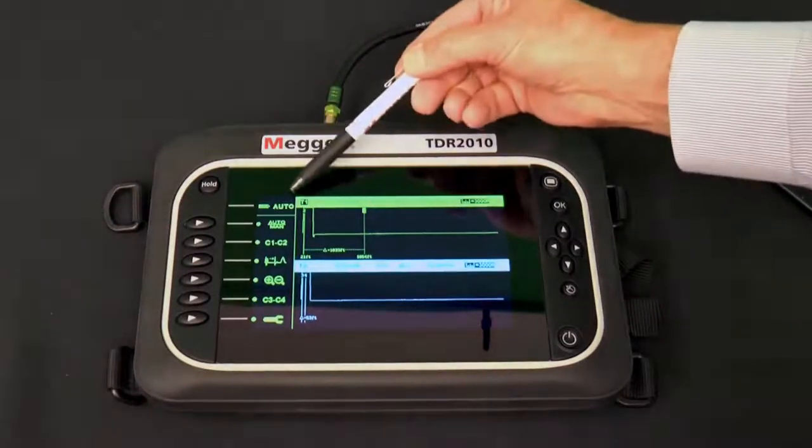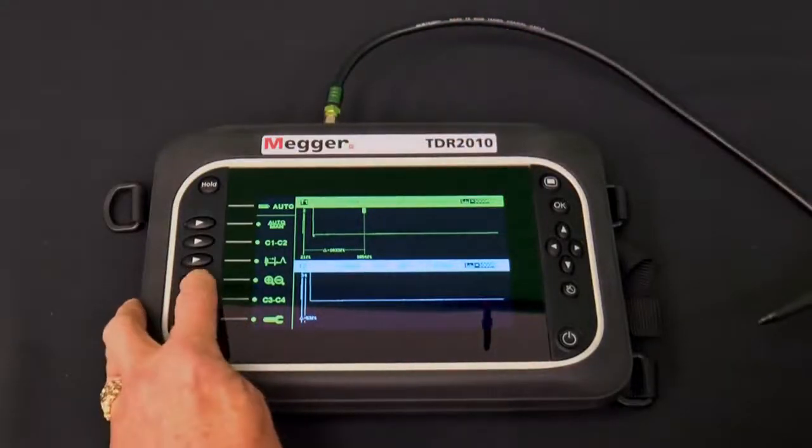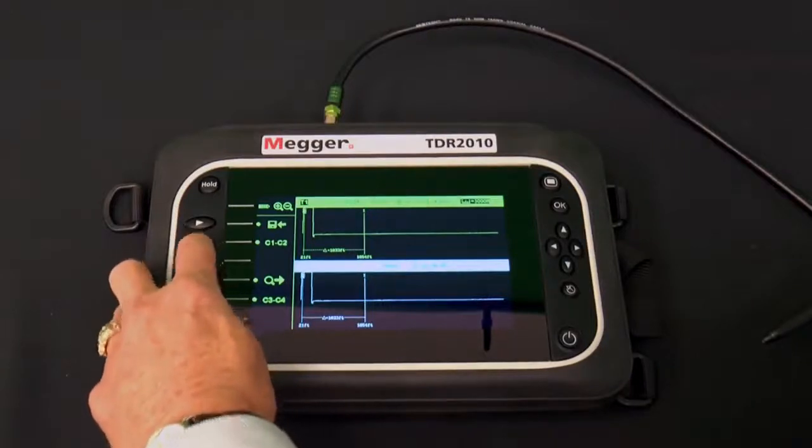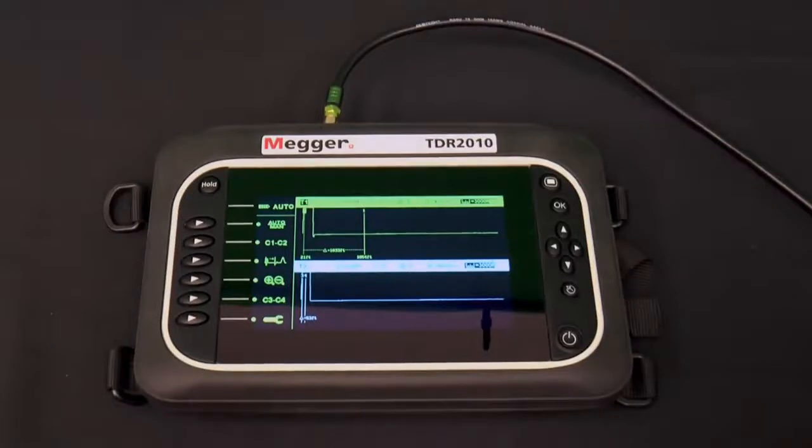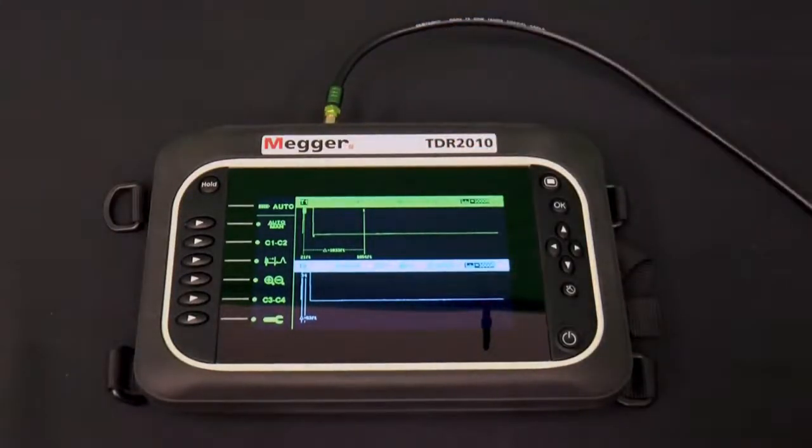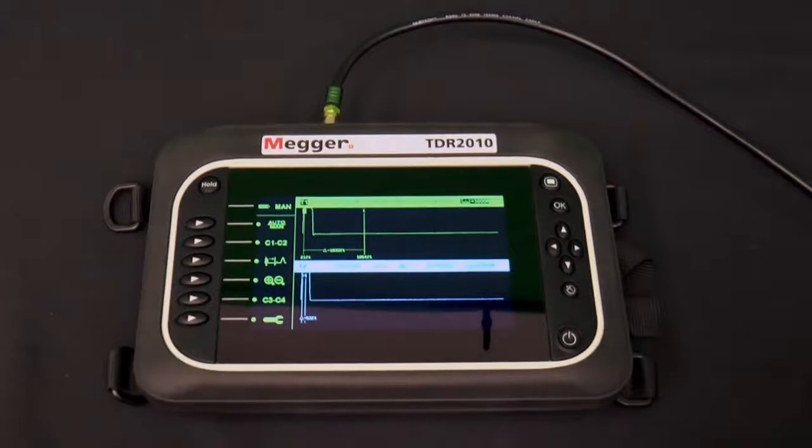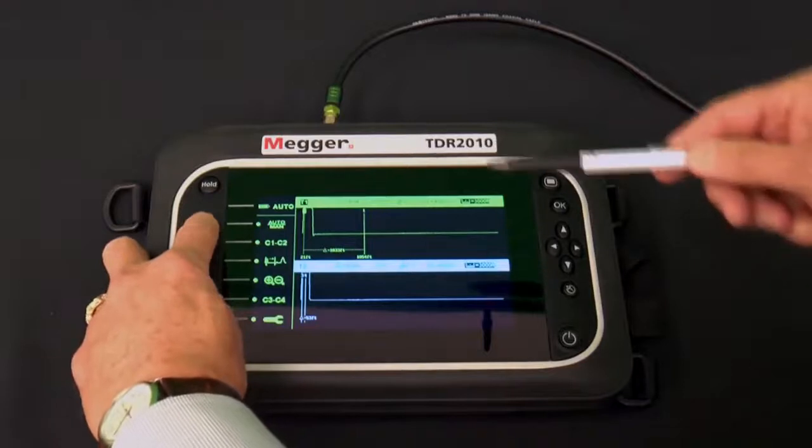Next to this is an icon that indicates the current operational state: Expert, Zoom, Auto, or Manual. These are what we will be considering. As discussed earlier, if MAN is displayed, the TDR2010 is in automatic mode. You press the first soft key, Auto over MAN, to change back and forth between automatic and manual mode.